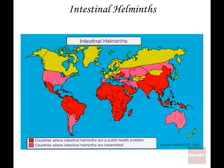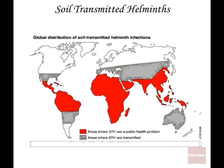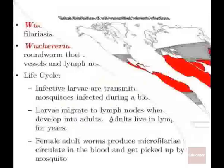The red area on the map shows countries where intestinal helminths are a public health problem. The pink countries are also where these organisms can be transmitted, but they're cooler and have higher socioeconomic status. Sanitation in some of these countries is not very good. Soil-transmitted helminths are also essentially located in almost the same countries — these are helminths where part of the life cycle occurs in the soil.